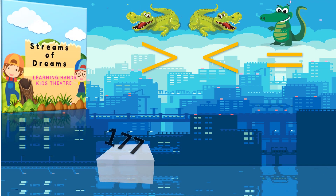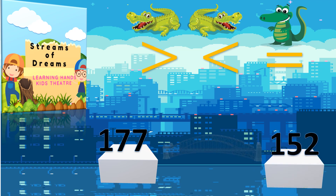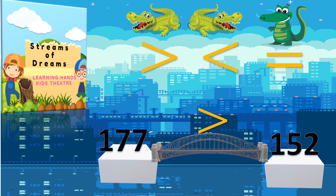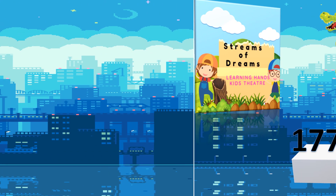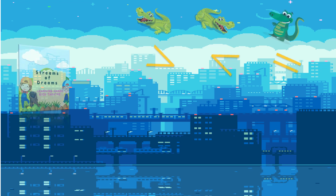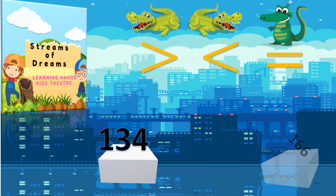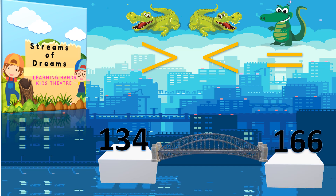Let's see some more numbers. 177, and across the bridge I have 152. Very nice — 177 is the bigger number. Once again: 132, and across the bridge I have 166. Yes, the alligator will go and eat 166.